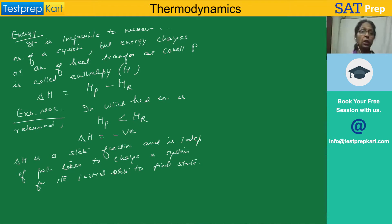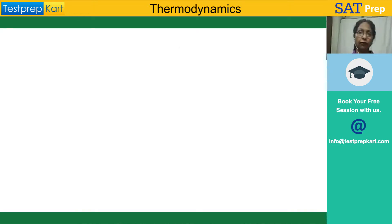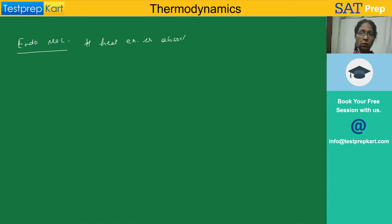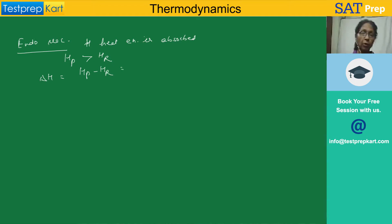Whatever may be the path, delta H depends only on the initial state and the final state. For endothermic reactions, heat energy is absorbed. The enthalpy of products will be more than the enthalpy of reactants. Delta H is always Hp minus Hr, so when enthalpy of products is more, delta H will be positive. In all endothermic reactions, delta H will be positive.